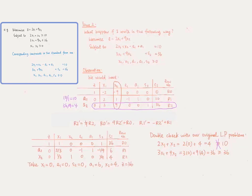Why is that? The reason is that the artificial variable a1 now has a value of positive 6, and it is this a1 which helps contribute to making the left-hand side equal to 10. That is, 2x1 plus x2 minus e1 plus a1 equals 2(0) plus 4 minus 0 plus 6, which equals 10, instead of just having 2x1 plus x2 greater than or equal to 10. Therefore, if we only consider x1 and x2 themselves, their sum 2x1 plus x2 was not enough to be greater than or equal to 10.